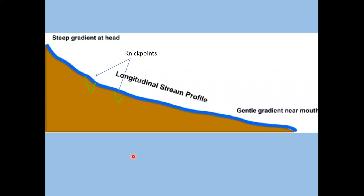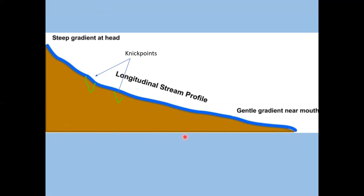Looking at a longitudinal profile: a river erodes, transports, and deposits — it never stops unless dammed. The gradient is steeper in the headwaters and decreases toward the ocean. The work of the river is to smooth out that profile. On the vertical axis is elevation; the horizontal axis is distance, which could be hundreds or thousands of miles. Every river plotted on this kind of graph produces this characteristic longitudinal profile shape.